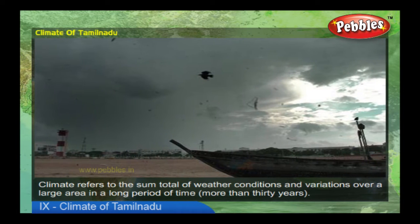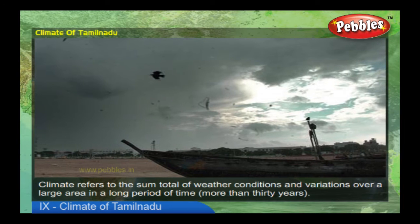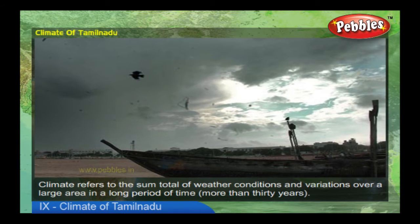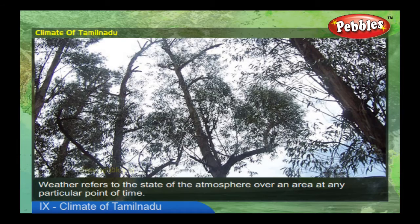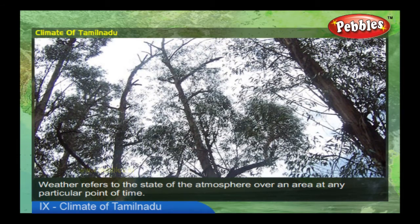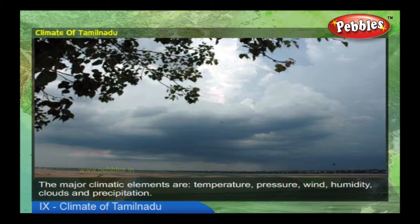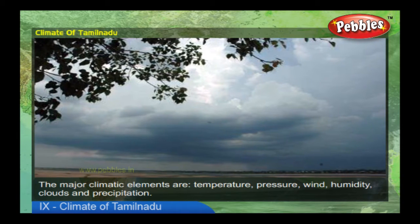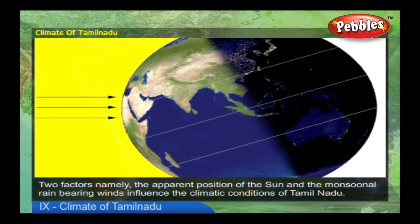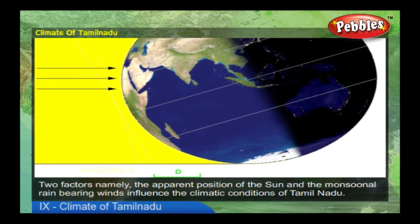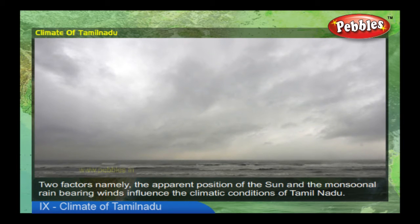Climate refers to the sum total of weather conditions and variations over a large area over a long period of time — more than 30 years. Weather refers to the state of the atmosphere over an area at any particular point of time. The major climatic elements are temperature, pressure, wind, humidity, clouds, and precipitation. Tamil Nadu has a tropical climate; two factors — the apparent position of the sun and the monsoonal rain-bearing winds — influence the climatic conditions of Tamil Nadu.